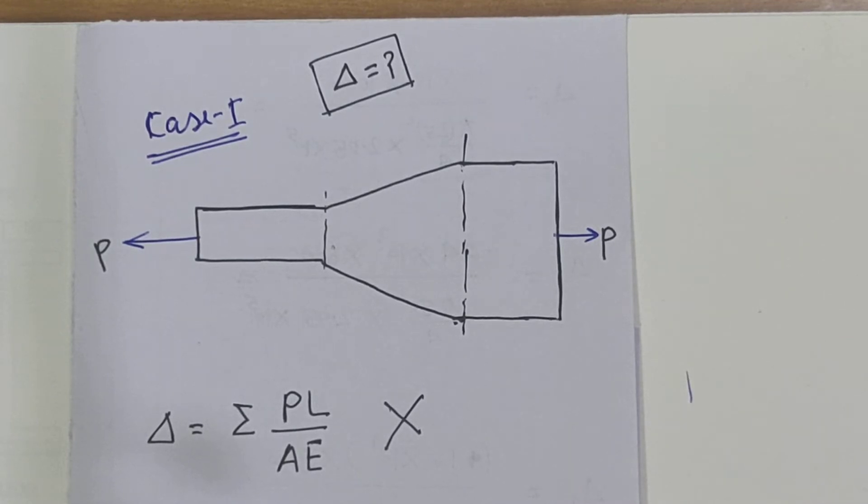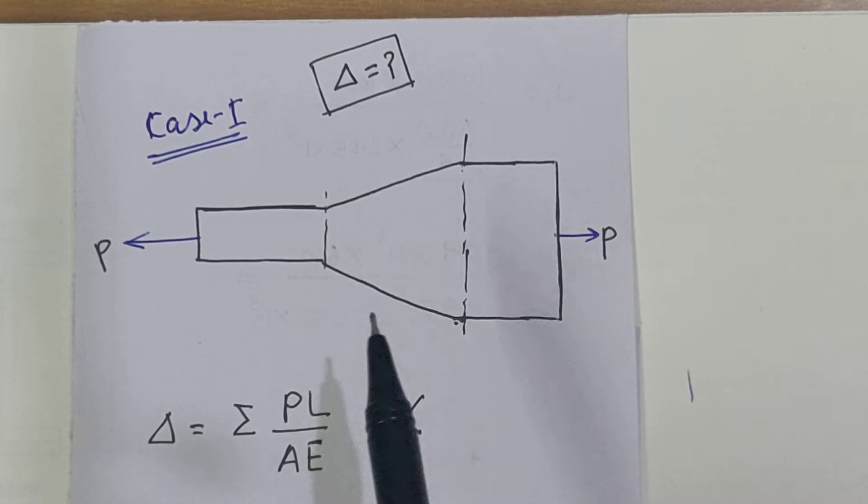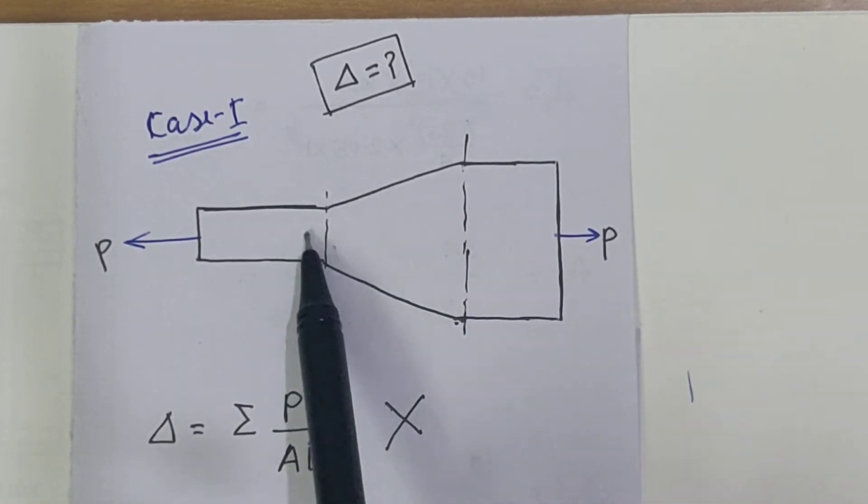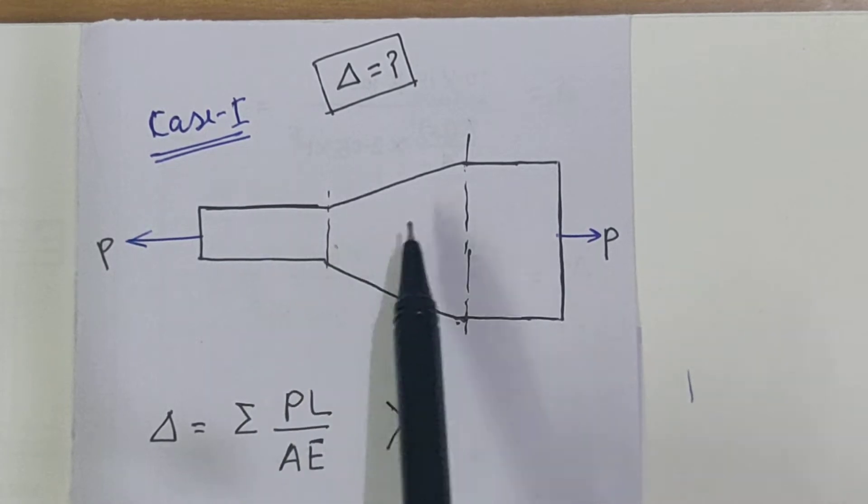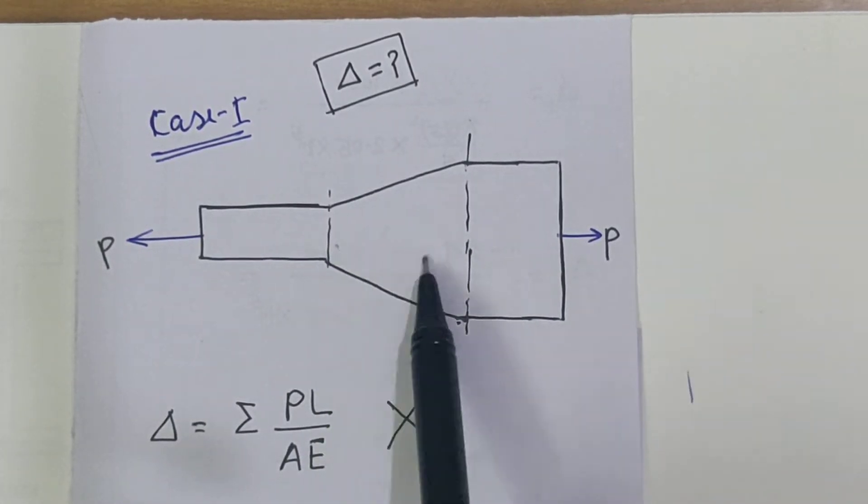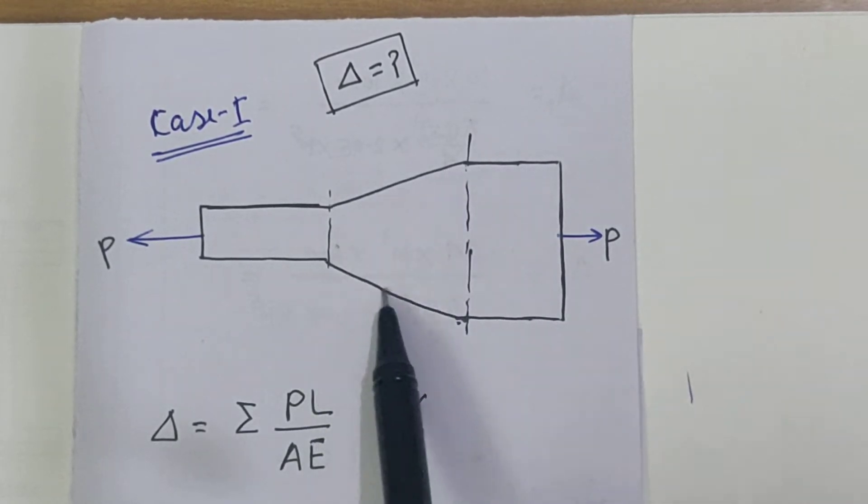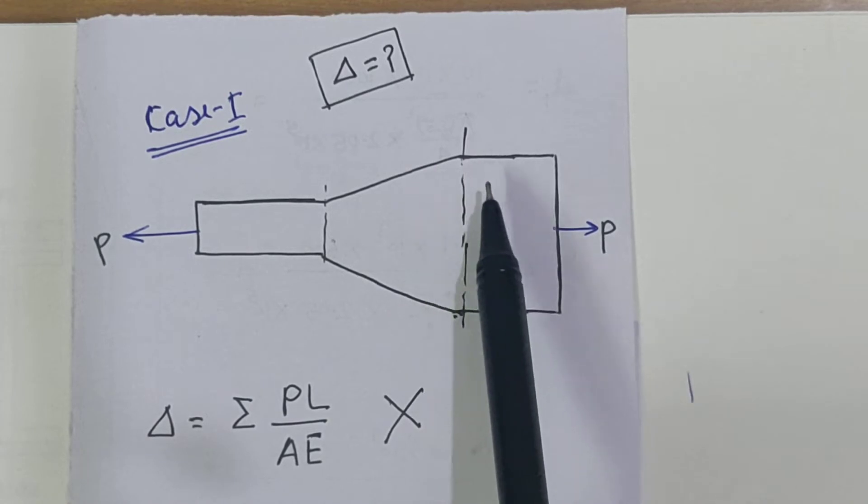Hello students, welcome to IT Academy X. In this video, I am going to discuss how to calculate deformation in a bar of varying cross-section. Here you can see the picture - there are three bars connected centrally, and the bar in the second segment has varying cross-section.